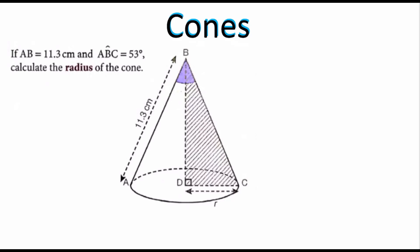Let's go ahead and talk about cones. On your screen you're going to see an example of a problem where you're going to have to use trigonometric principles in order to solve the problem. It says if AB equals 11.3 centimeters and angle ABC is 53 degrees, calculate the radius of the cone.